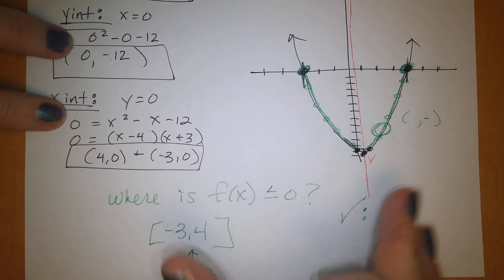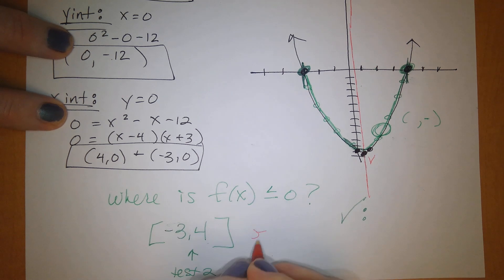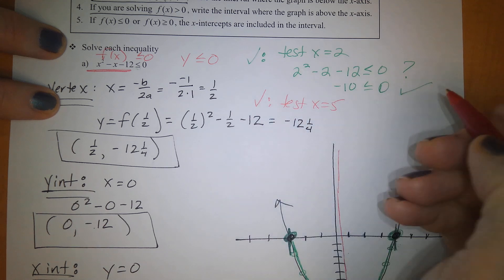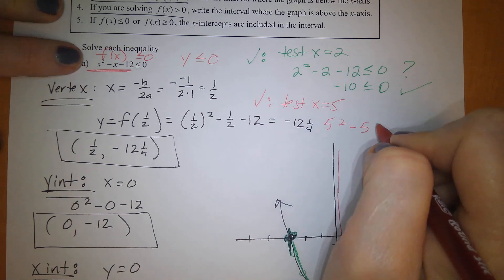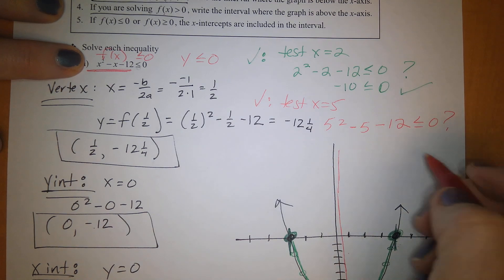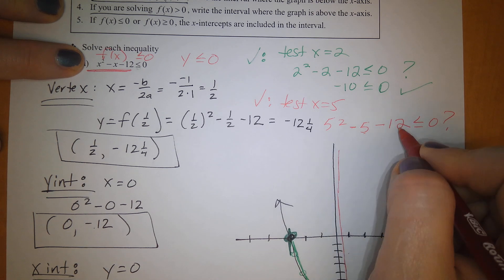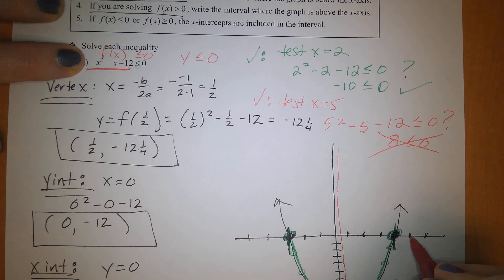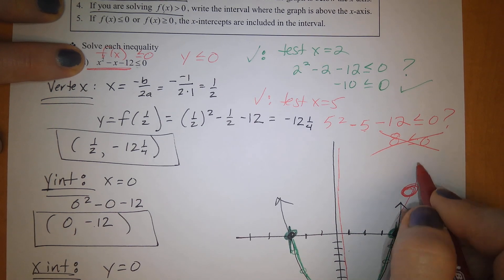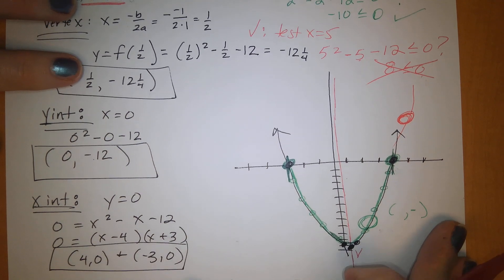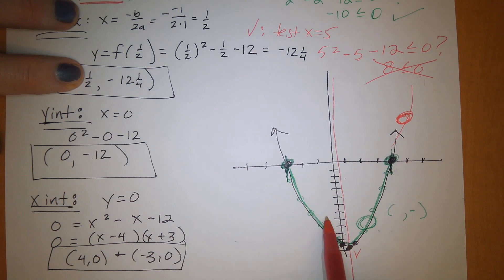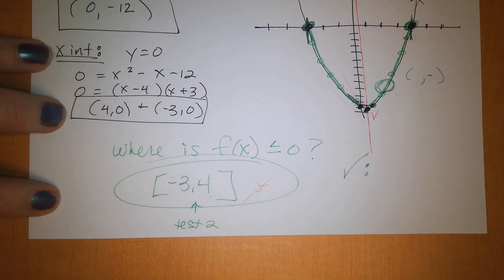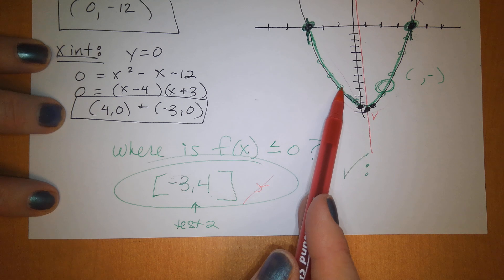If we test a point outside the range, for example x = 5, we get 5 squared minus 5 minus 12: that's 25 minus 5 is 20, minus 12 is 8, which is not less than 0. This confirms x = 5 yields a positive y value and is not part of the solution. So the answer is the interval [−3, 4] — those are the only x-values where the function is less than 0.